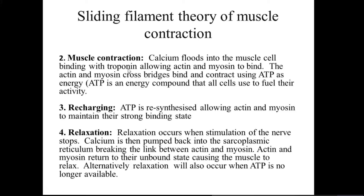When calcium ions are released into muscle cells through stimulation of the sarcoplasmic reticulum, the calcium ions attach to troponin, causing a change in troponin's structure. This breaks down the troponin-tropomyosin complex, leaving actin free to attach to myosin, forming cross-bridges. The actin and myosin cross-bridges bind and contract using ATP — adenosine triphosphate — as energy fuel.